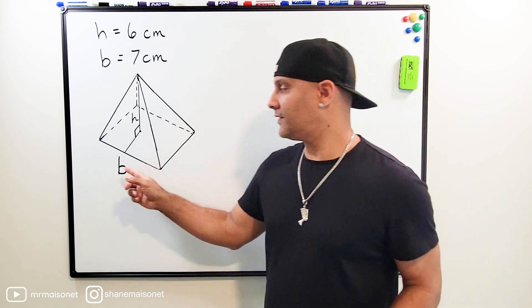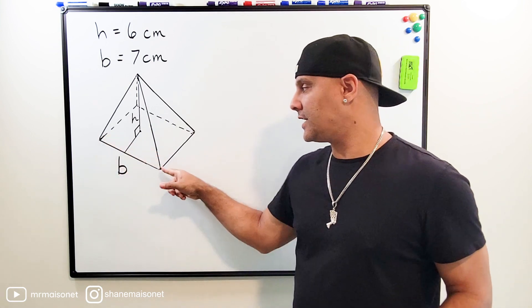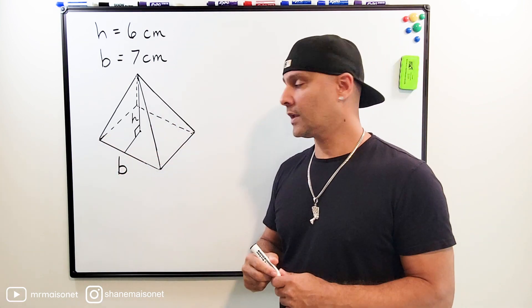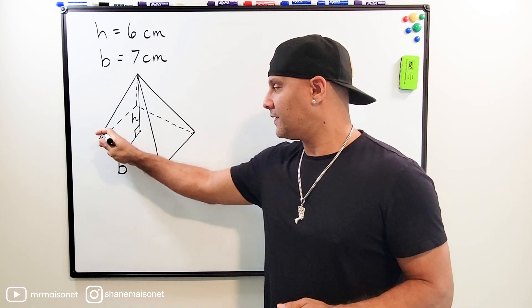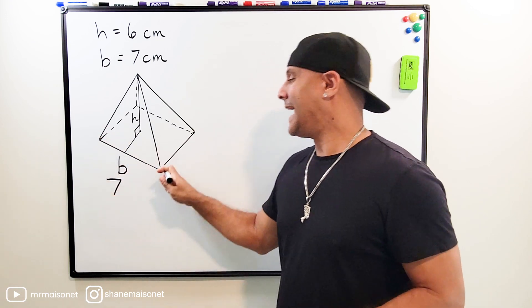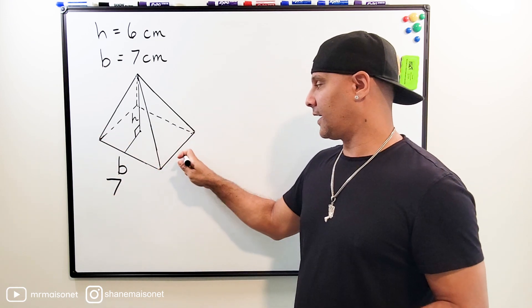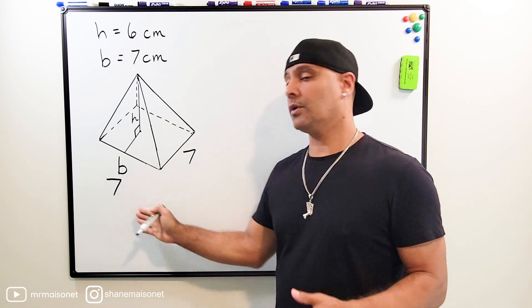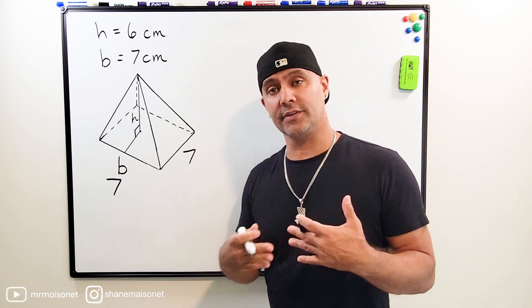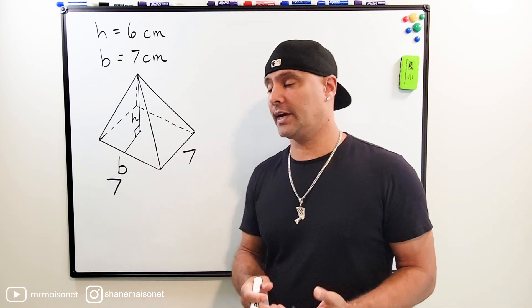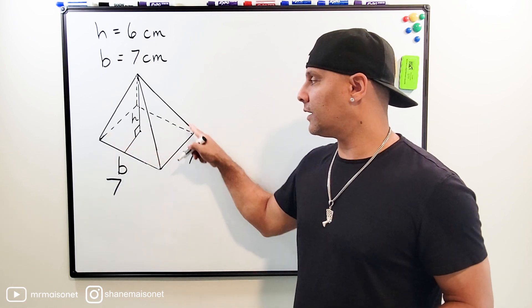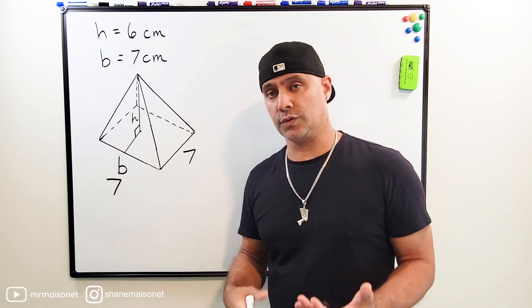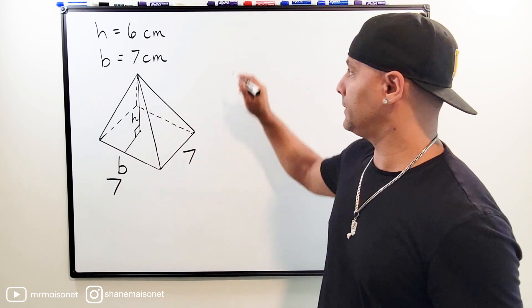If we take a look right here, it says that the edge of each side of our square is equal to 7 centimeters. So that means this edge is 7 centimeters, as is this side. If we take 7 and multiply it by itself, or square it, that gives us a product of 49. So we know that the area of this pyramid's base is equal to 49 square centimeters.